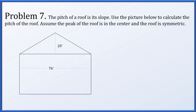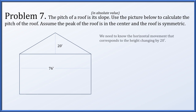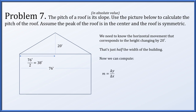For problem seven, the pitch of a roof is its slope. Use the picture to calculate the pitch, assuming the peak is in the center and the roof is symmetric. Pitch is the absolute value of the slope. The height delta y is 20. Since the whole width is 76 and the roof is symmetric, the horizontal distance to the peak is 38 feet. So the slope is 20 over 38, which simplifies to 10 over 19.